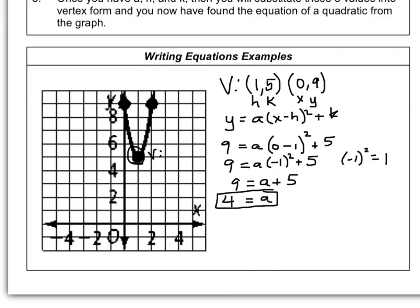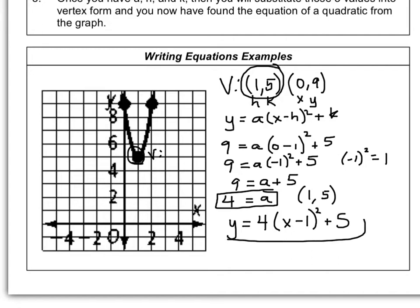Using a equals 4 and the vertex (1, 5), I substitute into vertex form: y equals 4 times the quantity x minus 1, squared, plus 5. And now you have the equation of the graph.